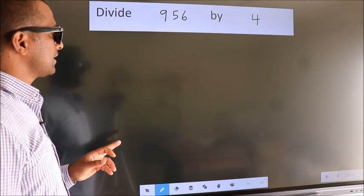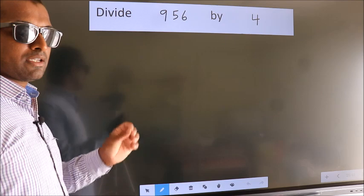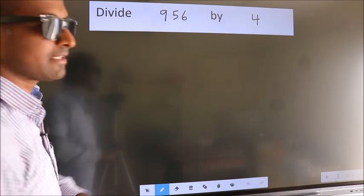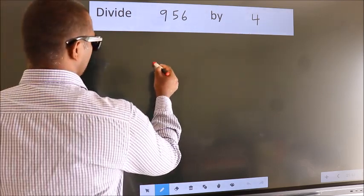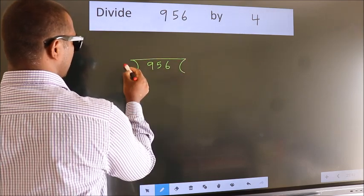Divide 956 by 4. To do this division, we should frame it in this way: 956 here, 4 here.